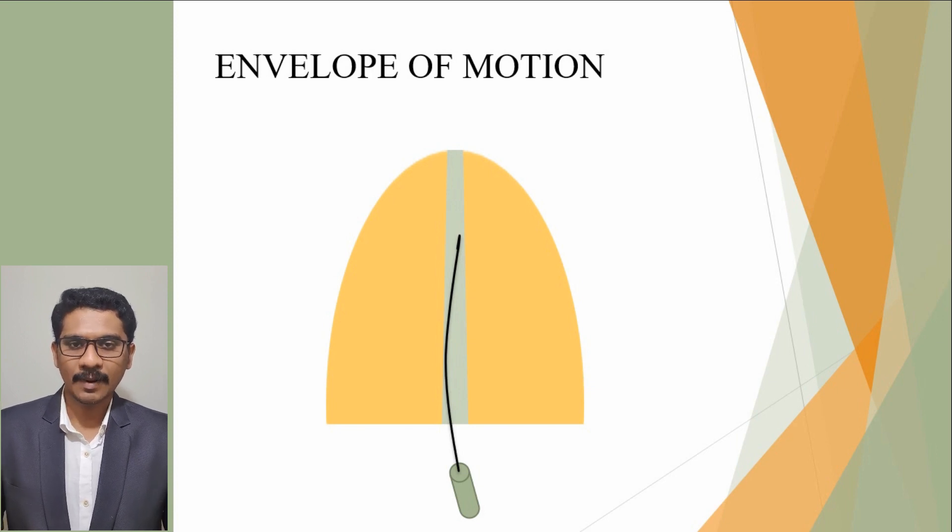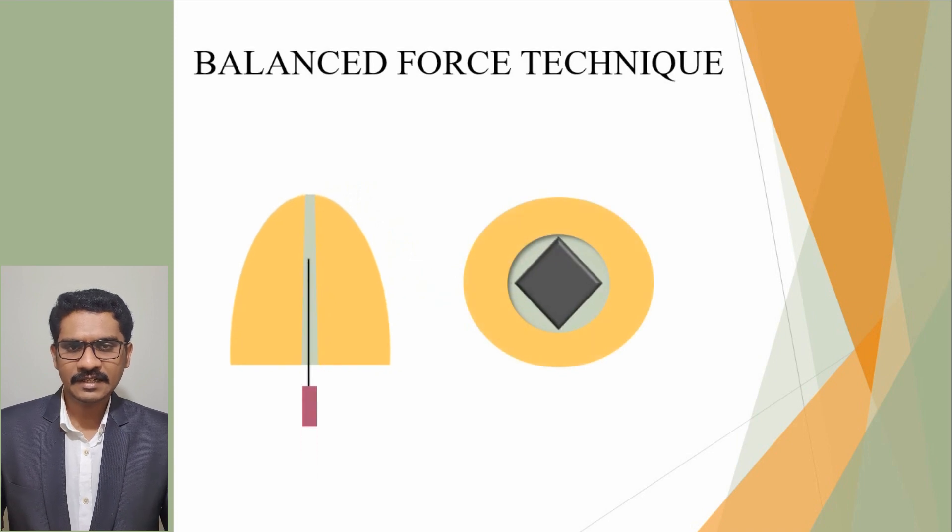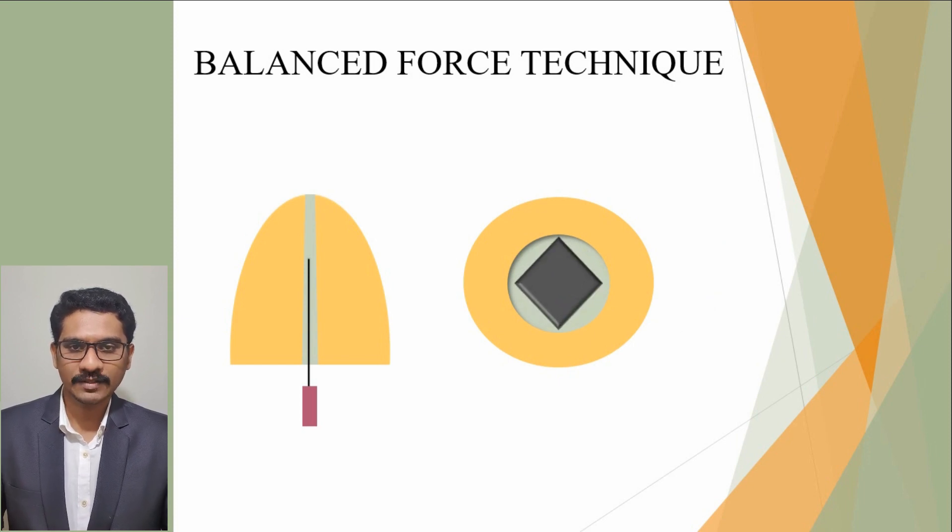Next we will see the balanced force technique. It is done by first inserting the instrument into the canal by moving clockwise with one quarter turn. Then to cut the dentin, the file is rotated counter-clockwise simultaneously pushing apically. Finally, the file is removed by rotating clockwise, simultaneously pulling the instrument out of the canal.